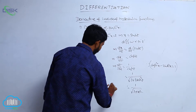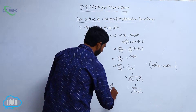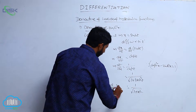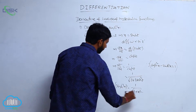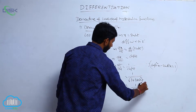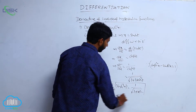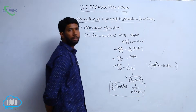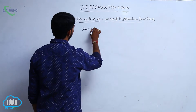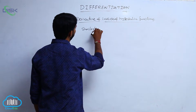Therefore, d by dx of sinh inverse x is equal to 1 by root of 1 plus x square.